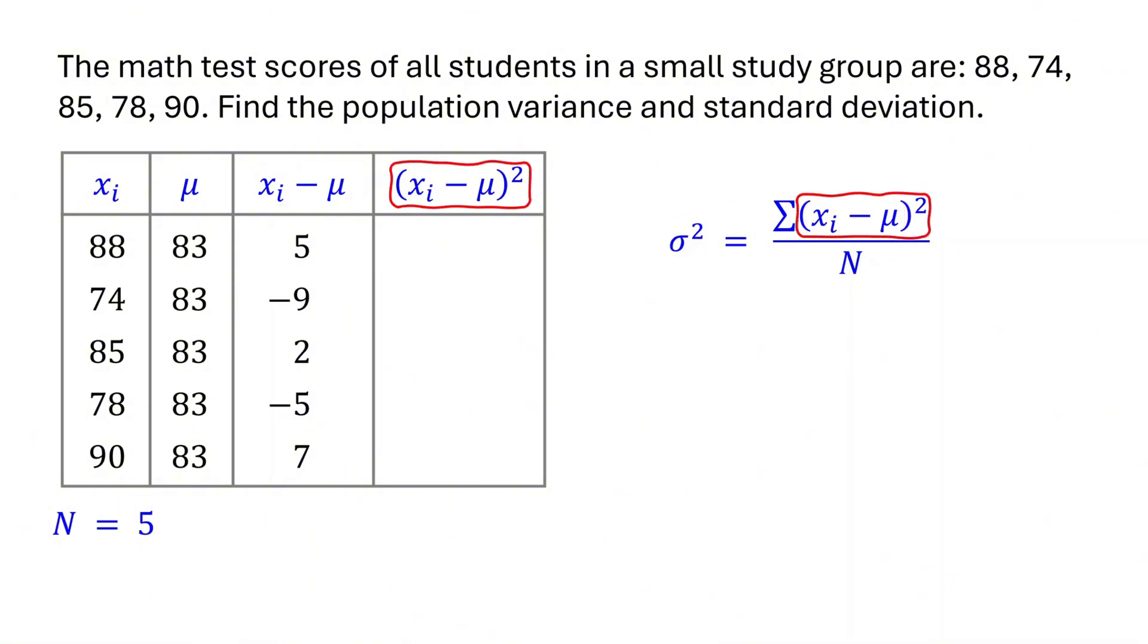Next, square each of the differences you obtained. 5 squared is 25. Negative 9 squared is 81. 2 squared is 4. Negative 5 squared is 25. 7 squared is 49.